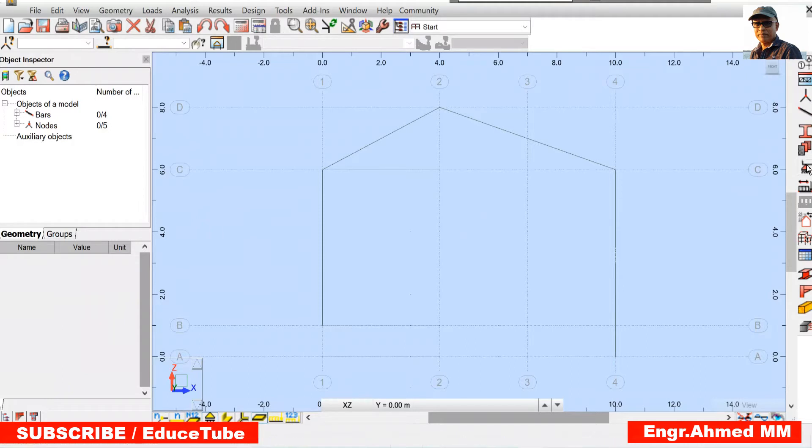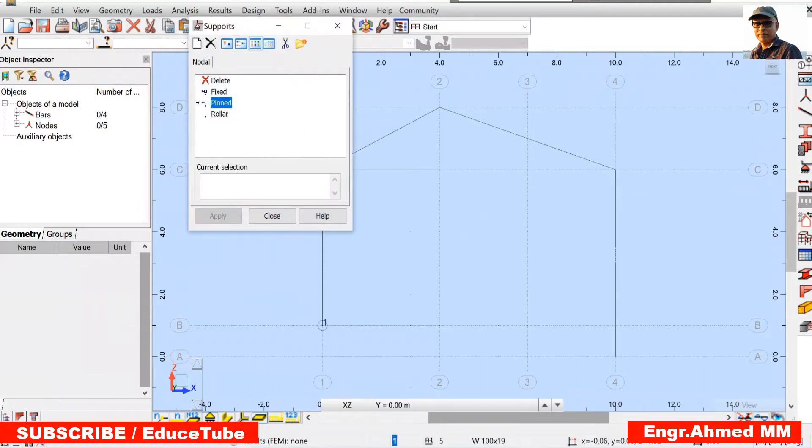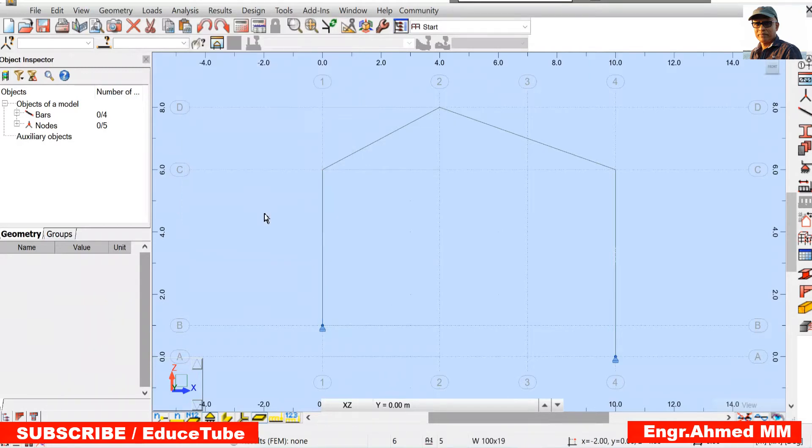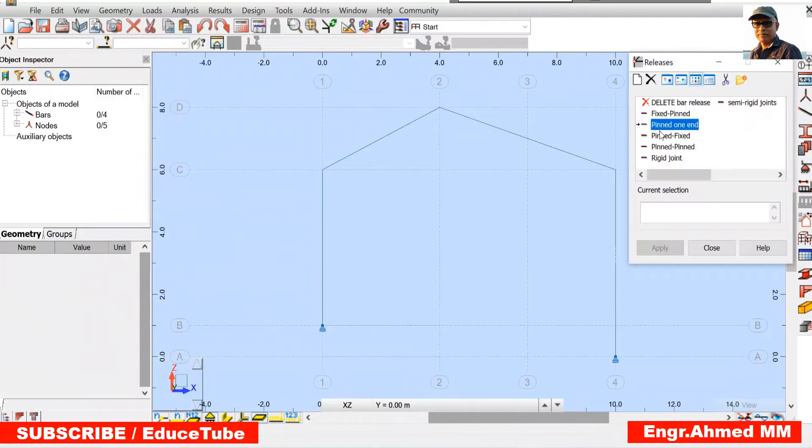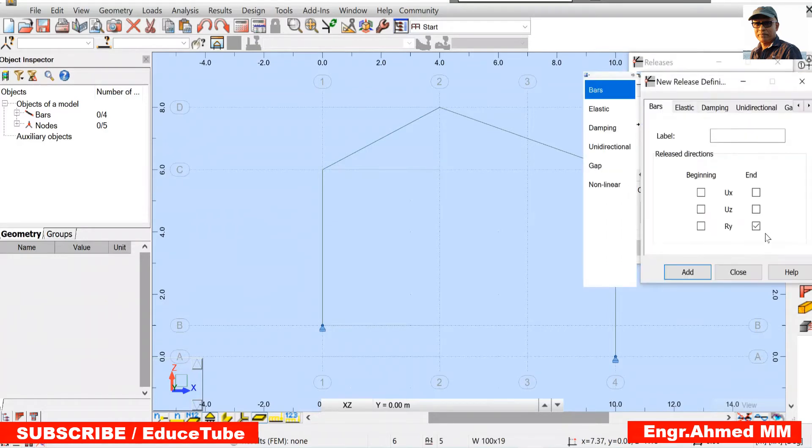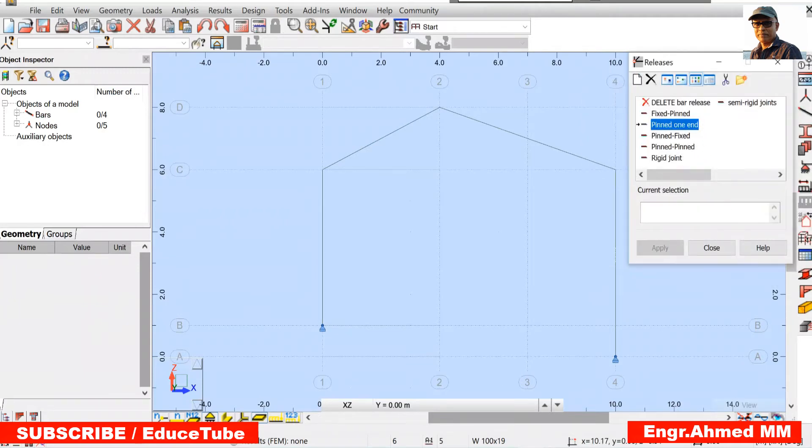Now we have to provide the support, pin supports. Click here, pinned. Click here, pinned. Because it is pin support, so close this. Now here we need pin also. For this pin, we have to go to geometry, go for releases, pinned one end. Because we need for these 2 bars only here, that is why one end. So what we will do? Click here, we got the pin. Again, click here, we got the pin. So we are done.